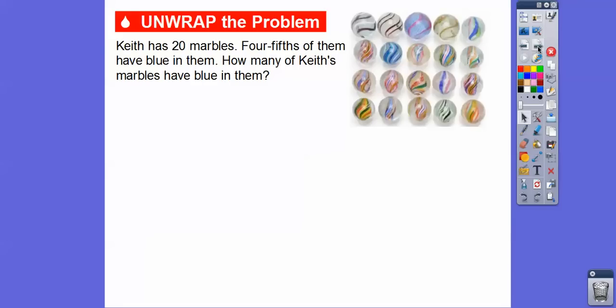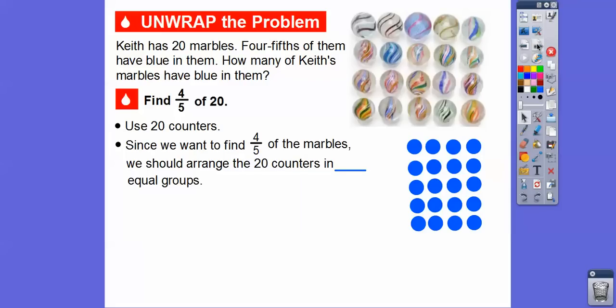Keith has 20 marbles. Four-fifths of them have blue in them. So how many of Keith's marbles have blue in them? So what we're looking for is we're going to find four-fifths of 20. Now in math, this word right here, the word of, means multiply. So it's the same thing as four-fifths times 20.